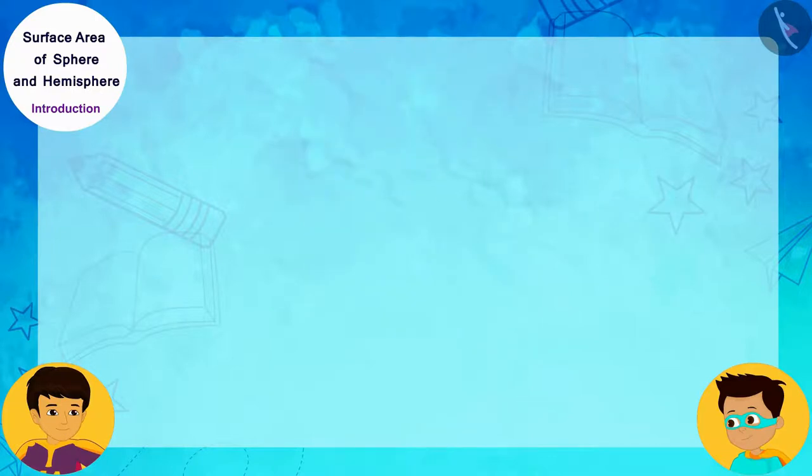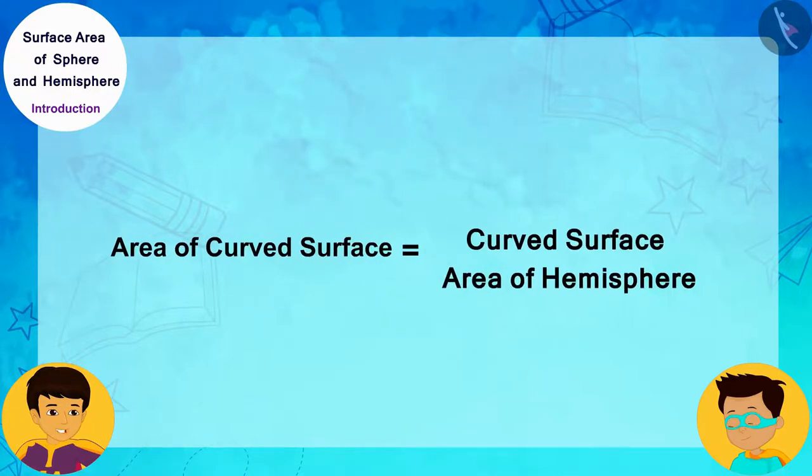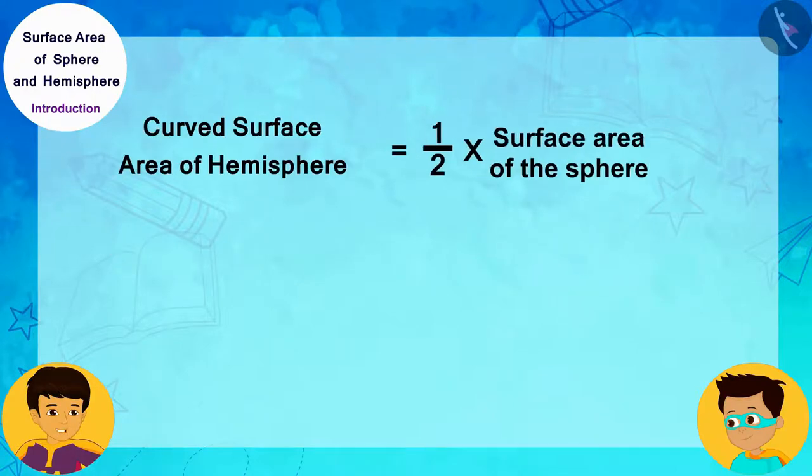That's correct! The area of this curved surface is equal to the curved surface area of the hemisphere. As you can see, the curved surface area of the hemisphere is half of the surface area of the sphere. That is, the curved surface area of the hemisphere is equal to the product of 2 pi and R square, where R is the radius of the base of the hemisphere.